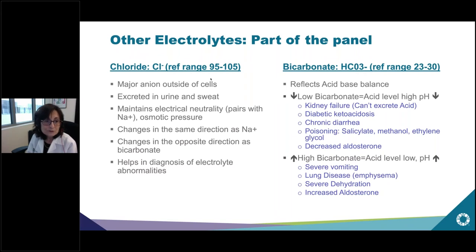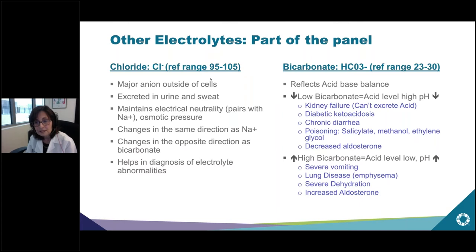Physicians use chloride levels to help diagnose electrolyte abnormalities. Bicarbonate or CO2 reflects acid-base balance. If your bicarbonate level is low, your acid level is high and the pH is low. This is very important in kidney failure because when you have kidney failure, the kidney can't excrete acid properly and the bicarbonate level falls. Other conditions causing this include out-of-control diabetes, chronic diarrhea, salicylate poisoning, and decreased aldosterone.